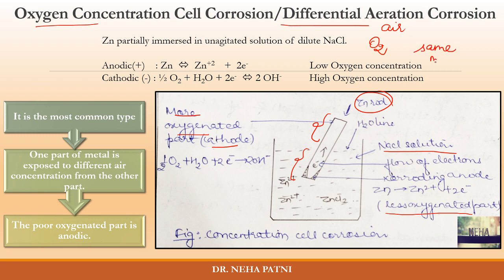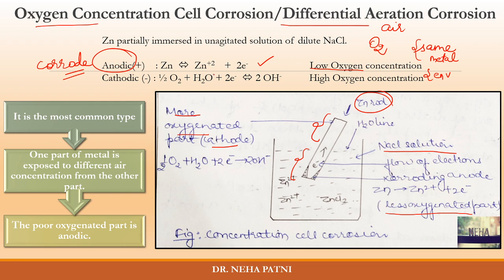So the concentration cell develops under two conditions: same metal, but different environment — one area has good access to oxygen, another has lack of oxygen. At the area with low oxygen, the reaction is always oxidation; the material is anodic and corrodes. At the cathode, oxygen takes up electrons to form OH⁻ ions, and the overall corrosion product is formed.